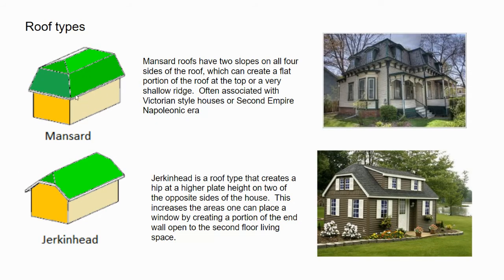Mansard roofs slope in two directions on all four sides, creating a hip roof at the bottom with another shallower cap at the top — think of it as a double-sloped hip. Often from street view you can't see the peak because it's quite shallow, and sometimes it's flat. In our area, some old ship captains' homes were designed this way with a widow's walk at the top. It's called a widow's walk because ship captains' wives would go up there to look for their husbands' ships — and sometimes they didn't come back.